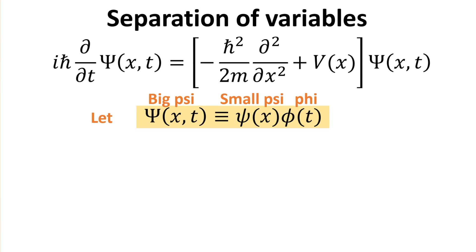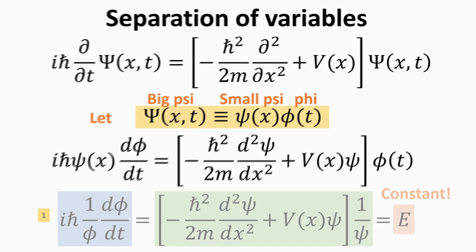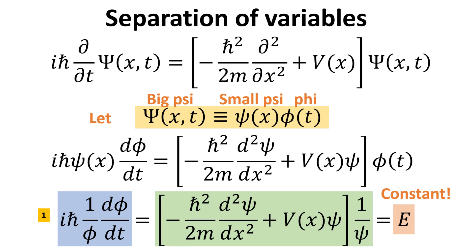It relies upon the assumption that the solution big psi can be written as a product of functions that solely depend on just one of the variables, as shown in the yellow box. Herein, the function small psi depends only on position x, while the function phi depends only on time t. Substituting big psi into the Schrödinger equation and taking the partial derivatives in time and position, followed by dividing the full equation by the product of functions small psi and phi, one can arrive at the equation labeled 1.